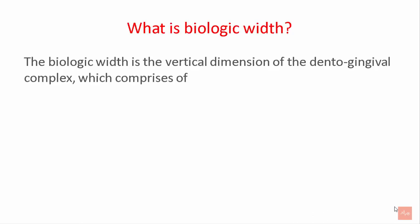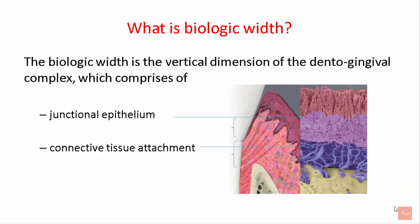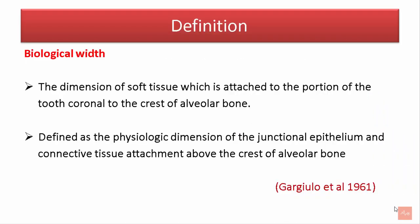So what is biological width? The biological width is the vertical dimension of the dento-gingival complex, which comprises the junctional epithelium and the connective tissue attachment. It is defined as the dimension of the soft tissue attached to the portion of the tooth coronal to the crest of the alveolar bone. It can also be defined as the physiologic dimension of the junctional epithelium and connective tissue attachment above the crest of the alveolar bone.